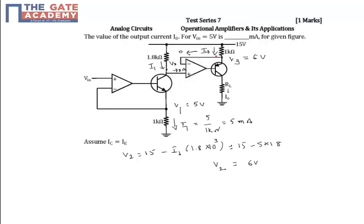So I0 equals 15 minus 6 divided by 1k. 15 minus 6 is 9, 9 divided by 1k, so this equals 9 milliamperes.